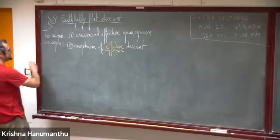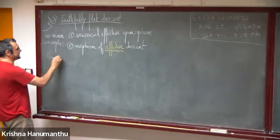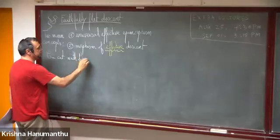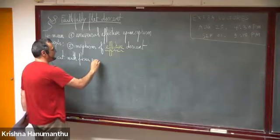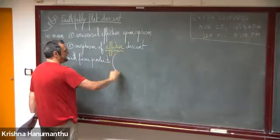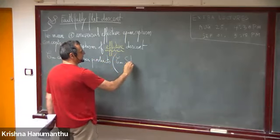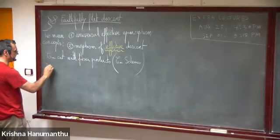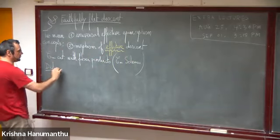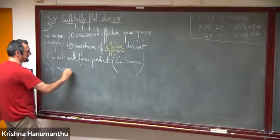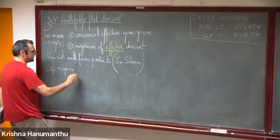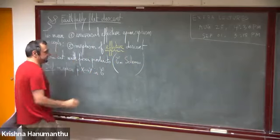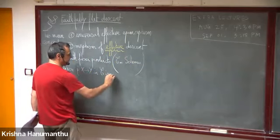So let me give the definition. Let C be a category with fiber products — for us, it can be the category of schemes. We have the following definition: a morphism P from X to Y in C is called an epimorphism.